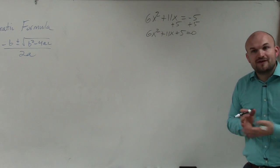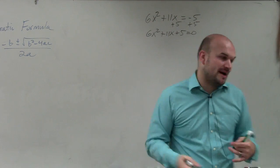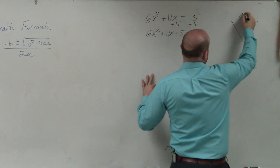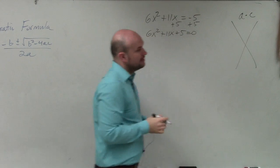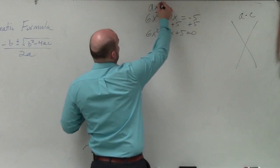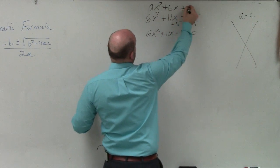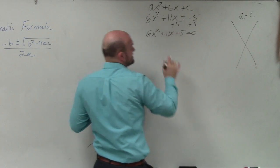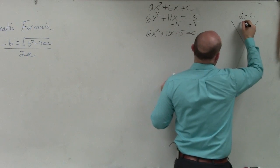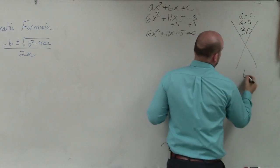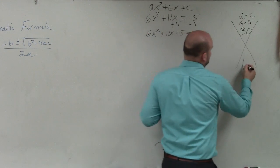So to factor this, basically what I need to do is just go back to my diamond that I've talked about, which is a times c. Now if you guys remember, a times c comes from the standard form of your quadratic, ax squared plus bx plus c. So you guys can see that a is equal to 6, b is 11, and c is 5. So a times c would be 6 times 5, which is 30, and b is positive 11.